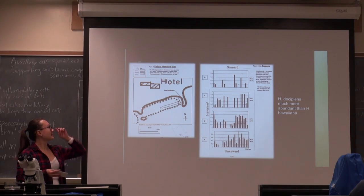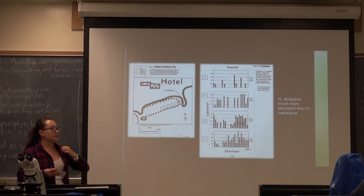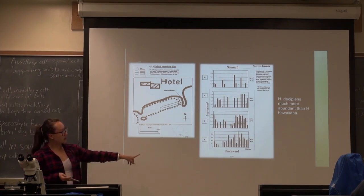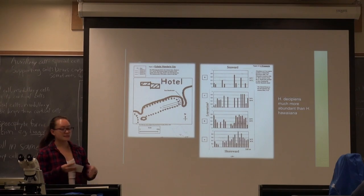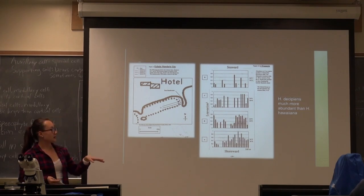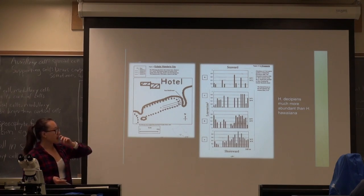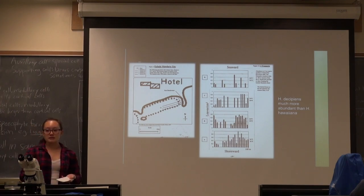On the left side you can see the transects A, B, C, and D. That's where they were surveying the species. The one on the right is the data they collected from the transects, and it shows that there was a lot more Halophila decipiens than Halophila hawaiiana on all four transects.